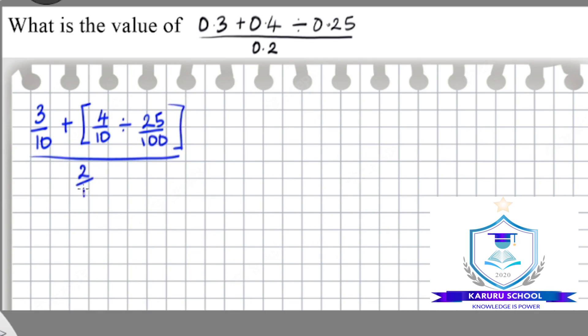So we'll start by simplifying the numerator. We have 3 over 10 plus we have 4 over 10 multiplied by the reciprocal of 25 over 100, which in this case will be 100 over 25, all these divided by 2 over 10.